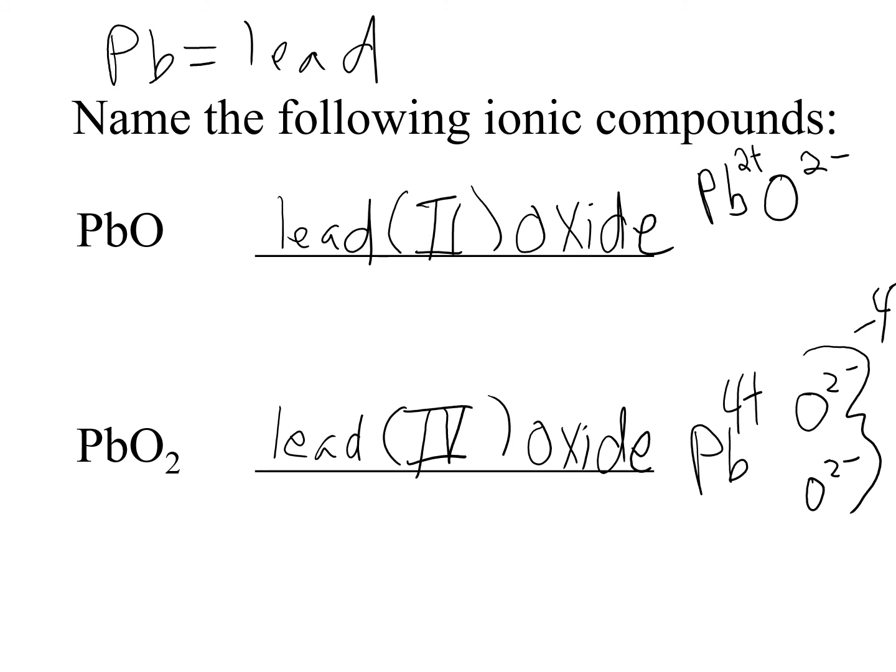Remember, type 2 ionic compounds always need that Roman numeral. If it's type 1 — meaning the charge never changes, columns 1, 2, and part of column 3 — do not put Roman numerals.